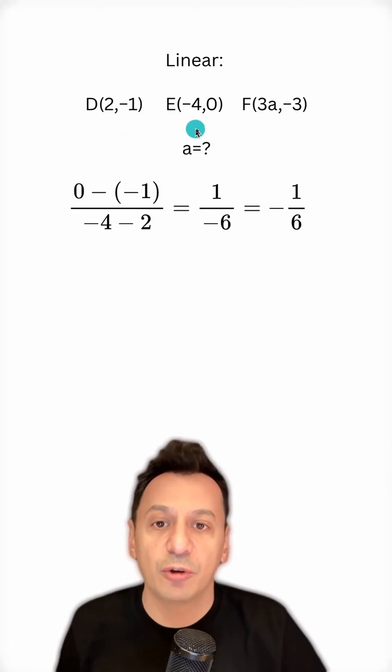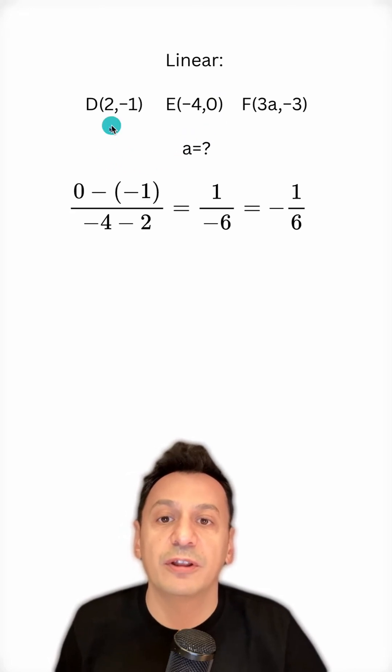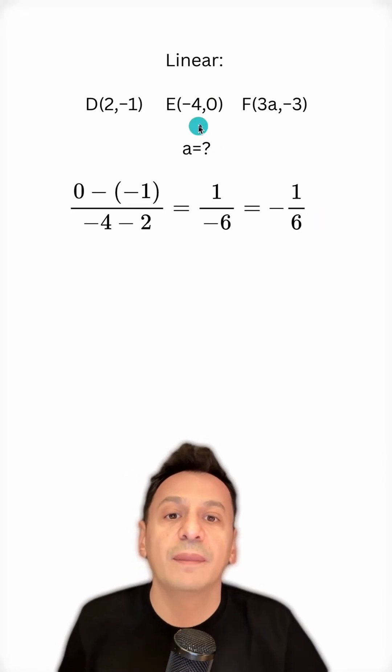First, let's find the slope of the line segment DE. I divide the difference of the ordinates by the difference of the abscissas, and I find the slope of the segment DE to be negative one over six. Now it's time for the segment EF.